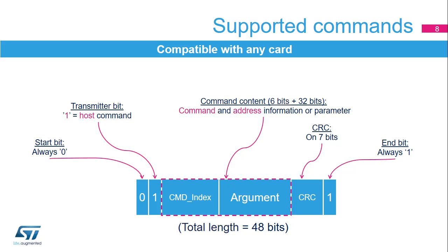The SDMMC controller offers high flexibility for configuring the command indexes and arguments. With a flexible 32-bit register for configuring arguments and an independent 6-bit field for the command index, this architecture ensures that the firmware can address any type of card. The CommandPath state machine is able to generate all command tokens, with no restrictions on command index or argument. In addition, the StartBit, TransmitterBit, CRC, and EndBit fields are automatically generated and sent on the bus.